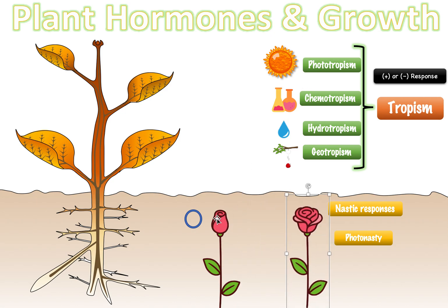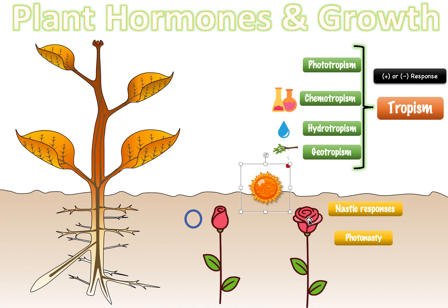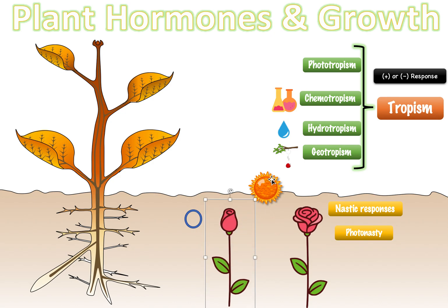For example, let's say there's no sun — the rose will fold itself up. But as soon as the sun comes out, the rose opens up. This is an example of a nastic response: the rose isn't opening up towards or away from the sun, it's just opening up. It's just a yes or no response. This is called a photonasty response — photo refers to sunlight, so light stimulates the flower to open up.